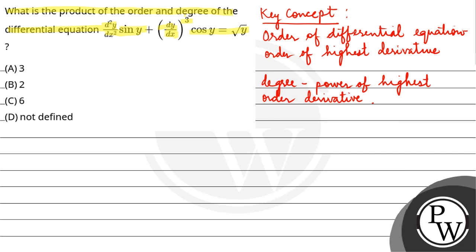So here we have highest order 2, because d²y/dx² hai. So order here we have 2. And what is the power of this highest derivative? 1, so degree is 1.